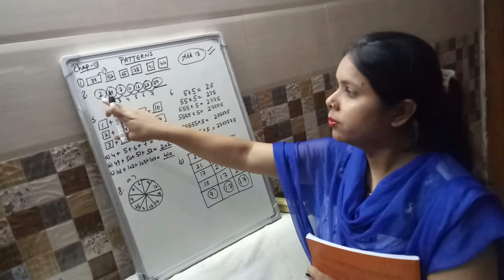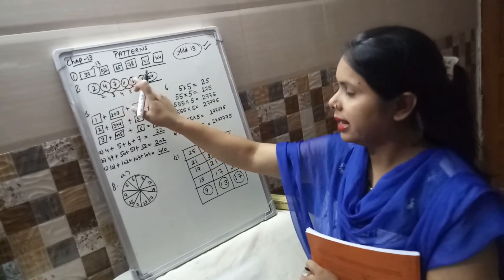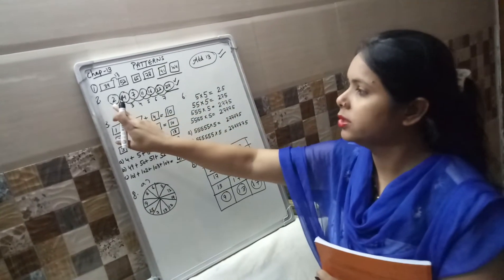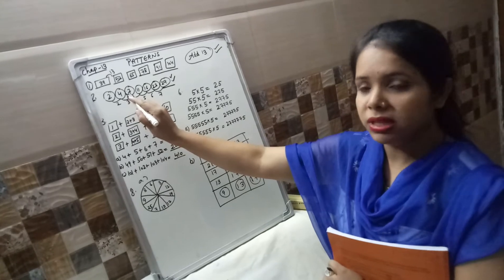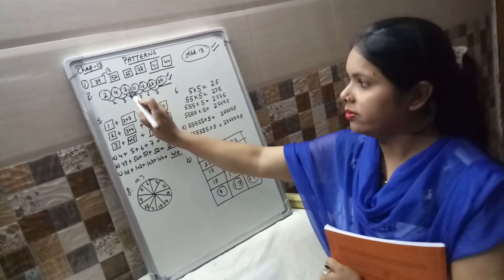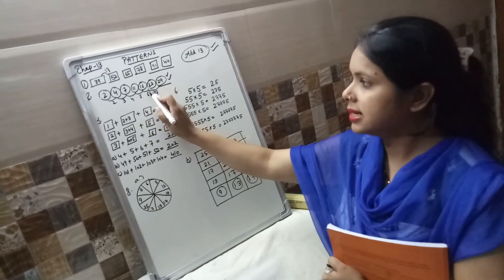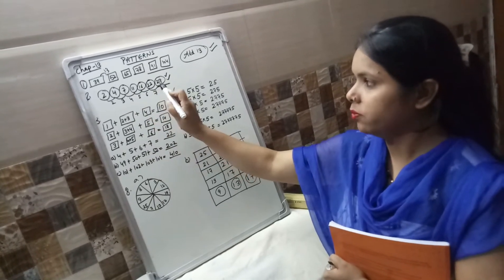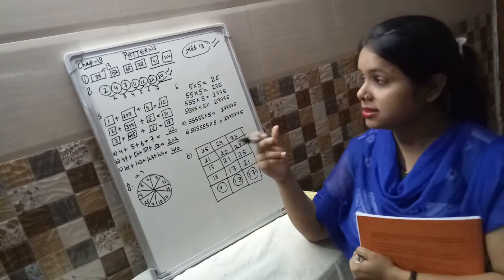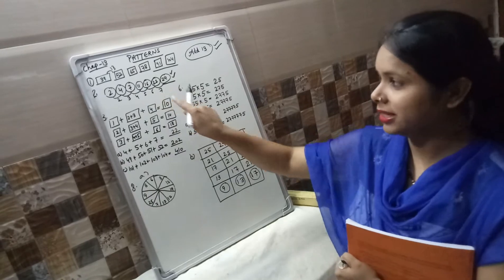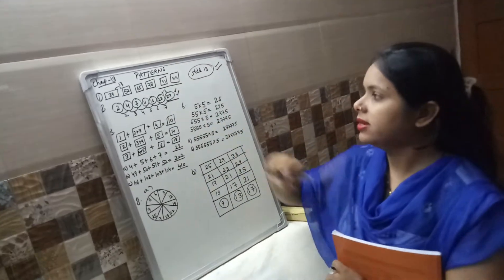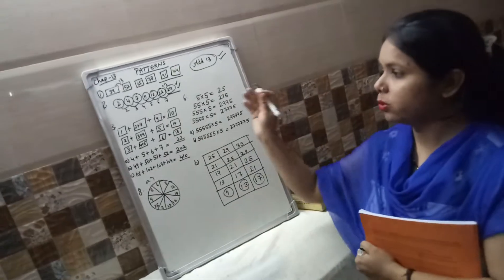Question number 2: 2, 4, 7, 11, 16, 22 — you have to tell the next number. Look at the differences: 4 minus 2 is 2, 7 minus 4 is 3, 11 minus 7 is 4, 16 minus 11 is 5, 22 minus 16 is 6. The differences go 2, 3, 4, 5, 6, so 7 will come next. 22 plus 7 is 29.